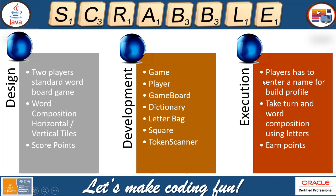Every word is linked with one letter and this is how we need to create and compose the entire word out of these letters in our letter bench. Now let's see the design, development and execution. As for the design, these are the requirements: it is a two-player controlled standard word game where we compose words horizontally or vertically and it has a score points feature. These three major features we have to implement.